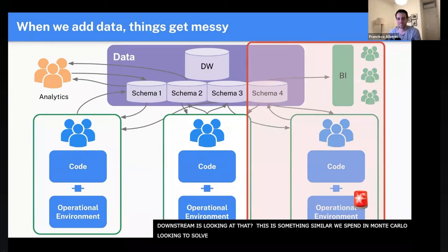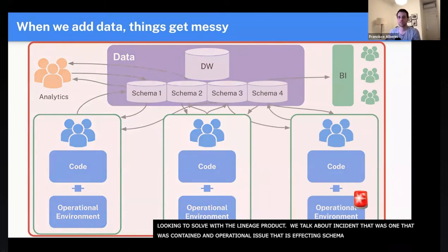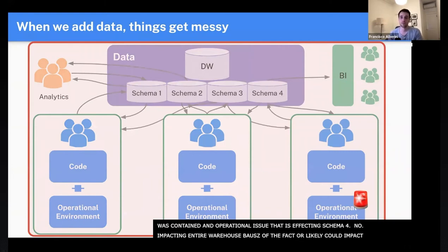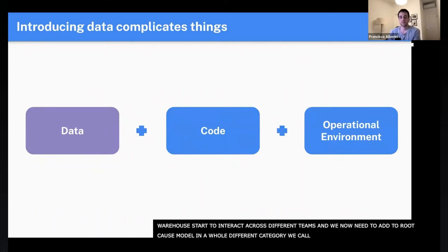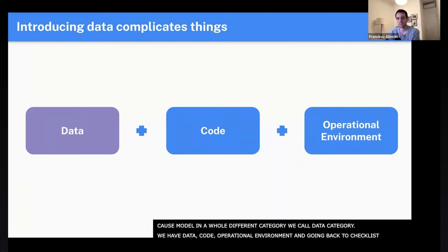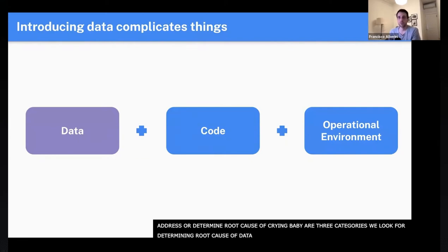So we talked about an incident where it was contained — one team has an operational environment issue affecting only schema four. But no — that could be impacting the entire warehouse, and therefore every single team in the company, because of the way these tentacles of the warehouse interact across different teams. That means we need to add a third category to our root cause model — the data category. So we have data, code, and operational environment — the three categories for determining the root cause of a data issue, like the checklist for determining why a baby is crying.